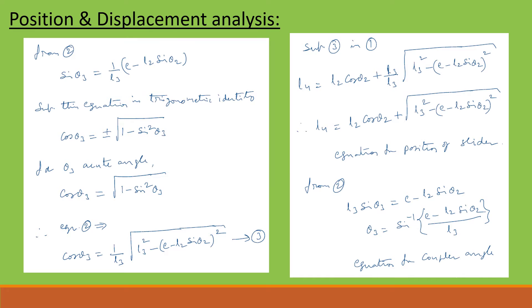Equation 2 can be written as sin theta 3 equal to (1/L3) times (E minus L2 sin theta 2). Substituting into the trigonometric identity cos theta 3 equal to plus or minus square root of (1 minus sin squared theta 3), and taking only the positive root for the accurate angle, we get cos theta 3 equal to square root of (1 minus sin squared theta 3).